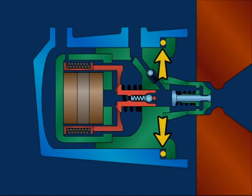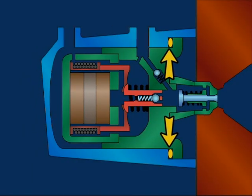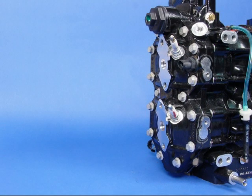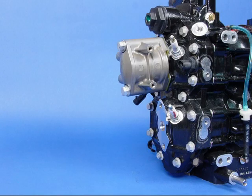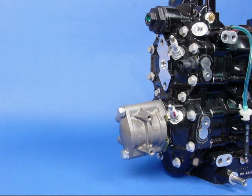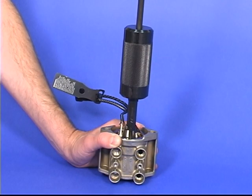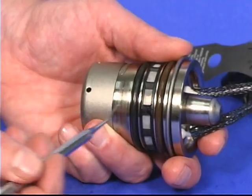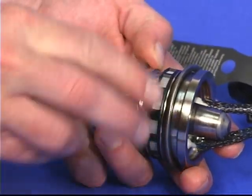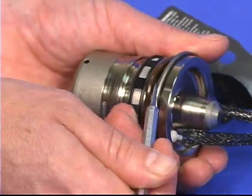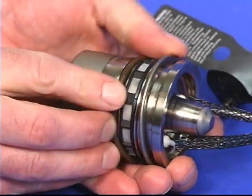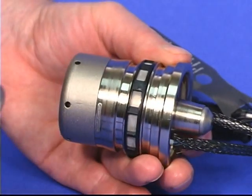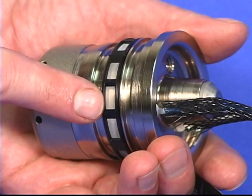A crush ring maintains the proper force to seal the injector against the cylinder head. The crush ring must be replaced whenever the injector is removed from its housing. Also, the crush ring must be replaced if a service replacement injector is tried on one cylinder, then removed, and subsequently installed on a different cylinder. Remove the injector from the housing with a slide hammer and adapter, being careful not to hit the nozzle. Remove the O-rings from the injector and remove the crush ring. Inspect the filter and clean it if necessary. Install a new crush ring.